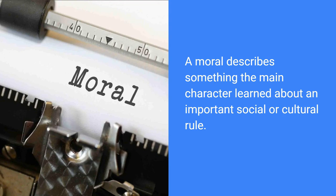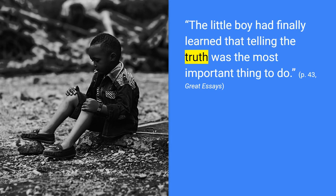A moral is something that describes what the main character learned about an important social or cultural rule. For example: "The little boy had finally learned that telling the truth was the most important thing to do." The word truth is highlighted here because telling the truth is often an important social or cultural value — a rule that our culture encourages us to live by. So this little boy learned a lesson related to that.